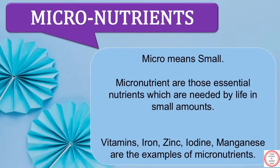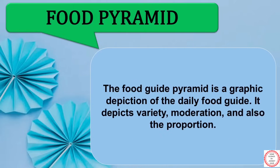On the other hand, micronutrients are those nutrients which your body requires in small amounts, like vitamins, iron, zinc, iodine, and manganese. Food guide pyramid is a graphic depiction of the daily food guide. It depicts variety, moderation, and proportion.